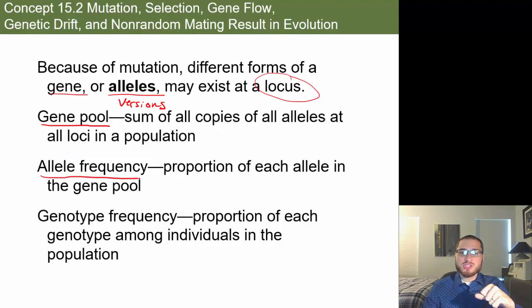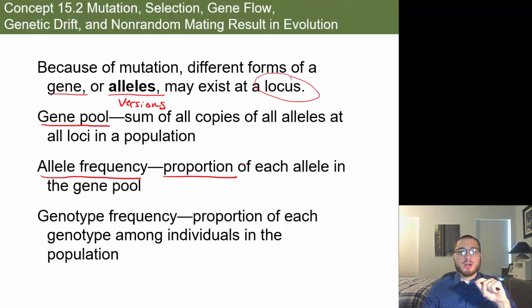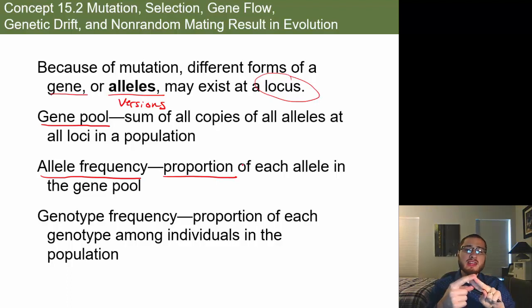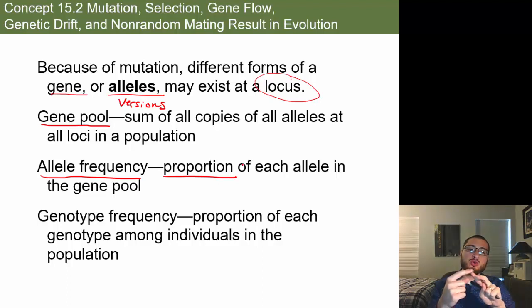Different versions of a gene are called alleles — we're using the same gene location, or locus, but different versions. The sum of all copies of all alleles at all loci in a population is the gene pool. Allele frequency is the proportion of each allele in a gene pool. For example, in a skunk species, 95% might have the allele for two white lines and 5% for one white line — those are the allele frequencies.